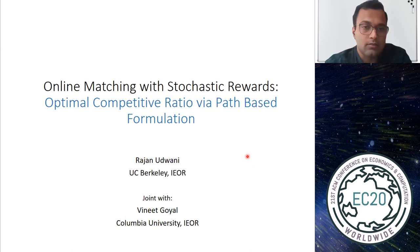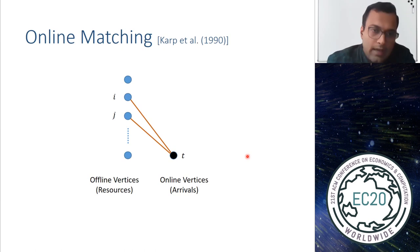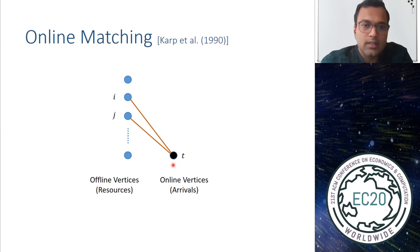This is joint work with Vinil Goyal from Columbia. Let me start with the classical setting in online matching: the online bipartite matching problem by Karp-Vazirani-Vazirani, so we are all on the same page. We have a bipartite graph with a set of offline vertices — these blue nodes — which you can think of as your resources known a priori.